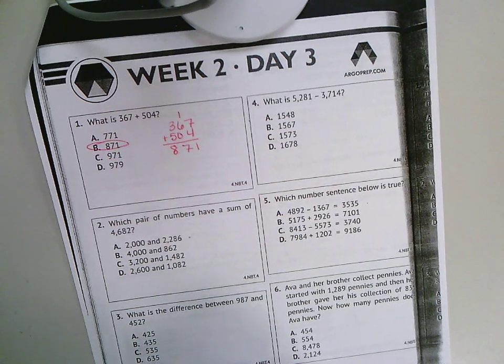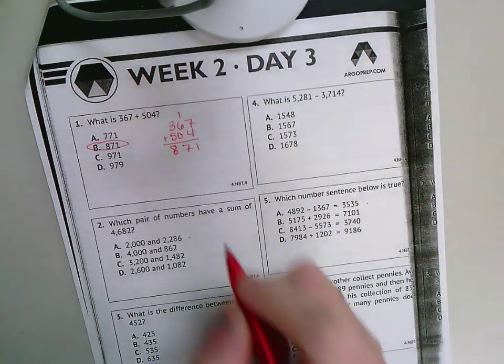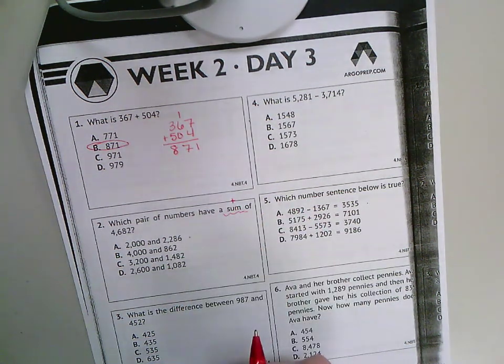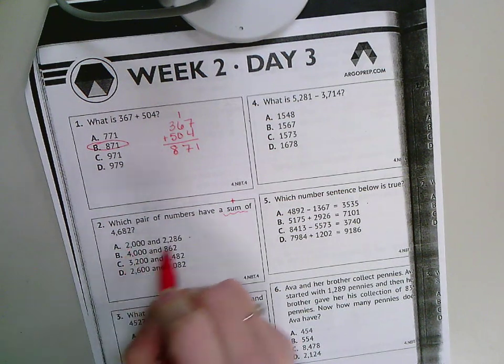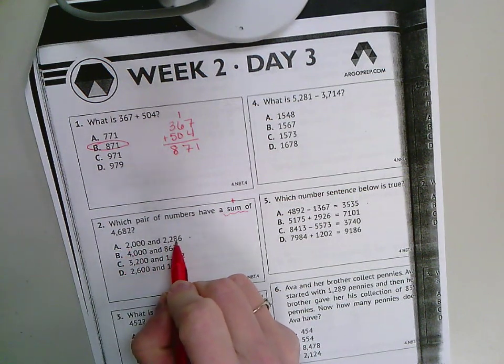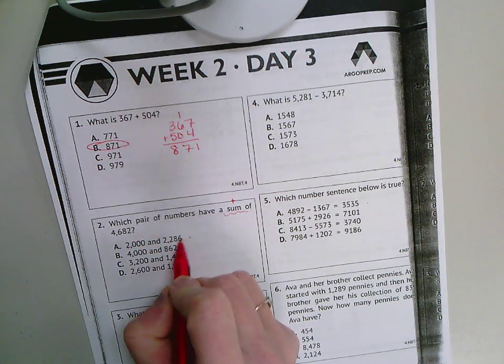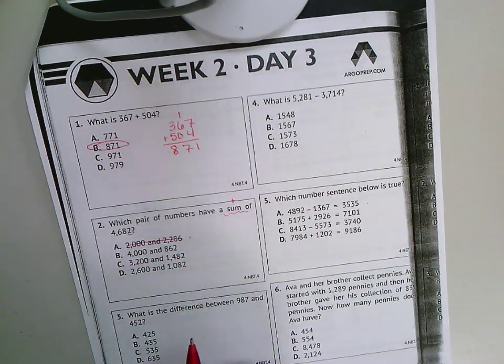Number two, which pair of numbers have a sum of 4,682? The word sum means that I'm adding. So 2,000 plus 2,286, well 6 plus 0 would be a 6 in the ones place and this is a 2 in the ones place, so that doesn't work.